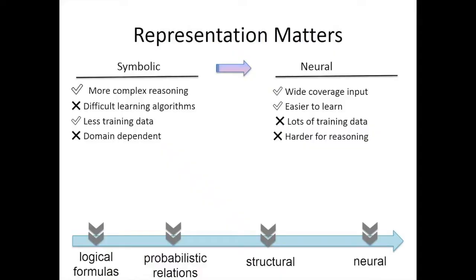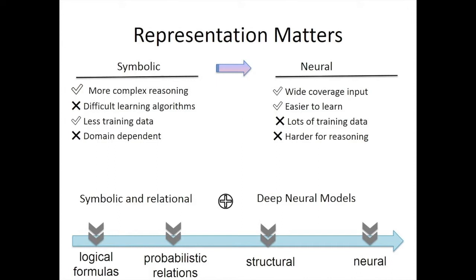So I've shown two different ends of the spectrum for representing input. Symbolic representations are great because they allow complex reasoning, but they usually work only for specific domains. Neural representations can cover a wide range of input and are easier to learn with enough training data, but are much harder for reasoning. Most of my work has focused on making logical formalisms softer or neural representations more structured, and in the future I'd like to combine these directions.